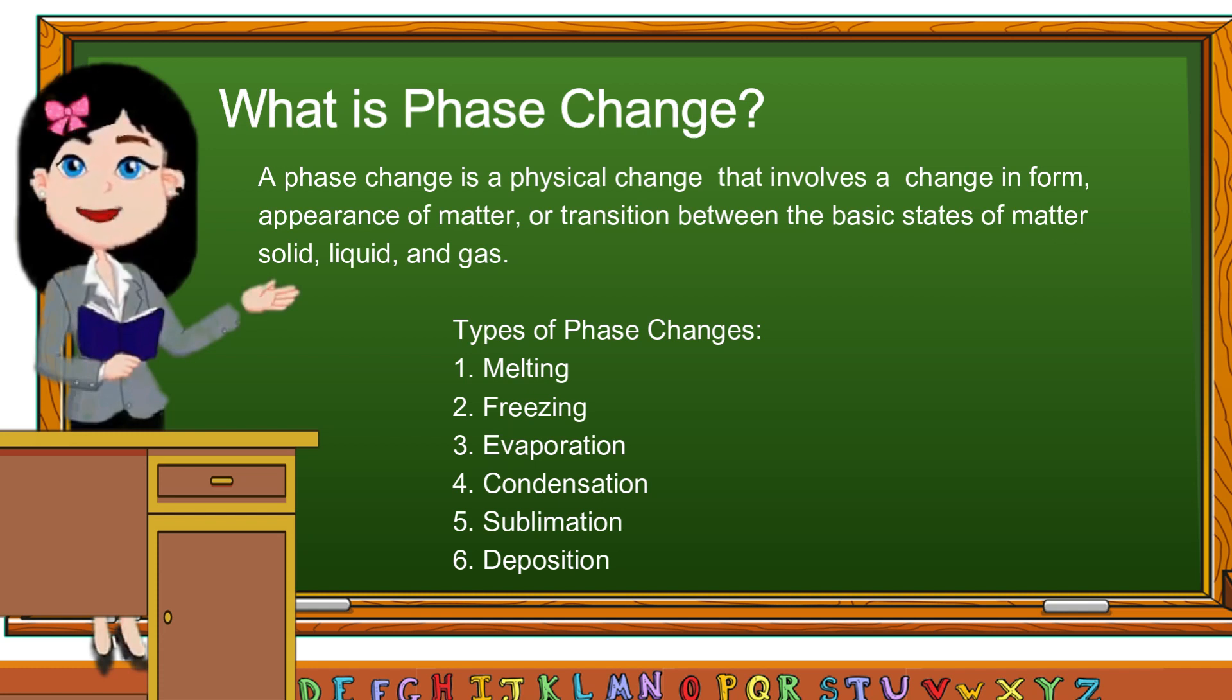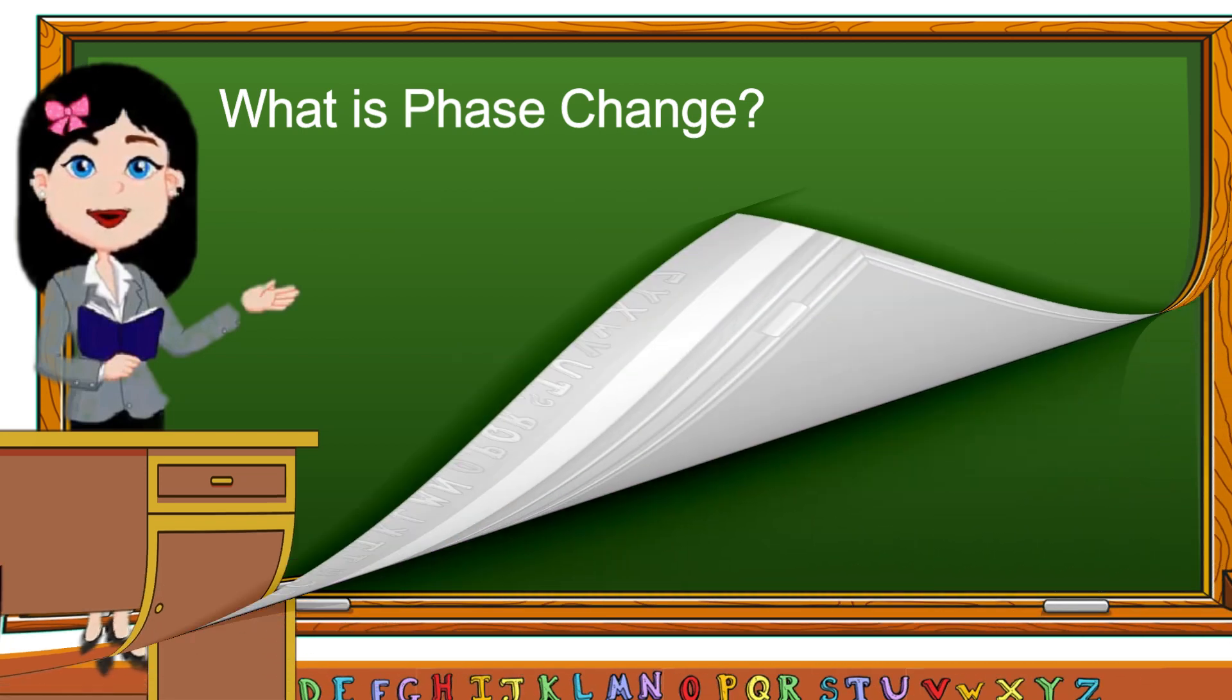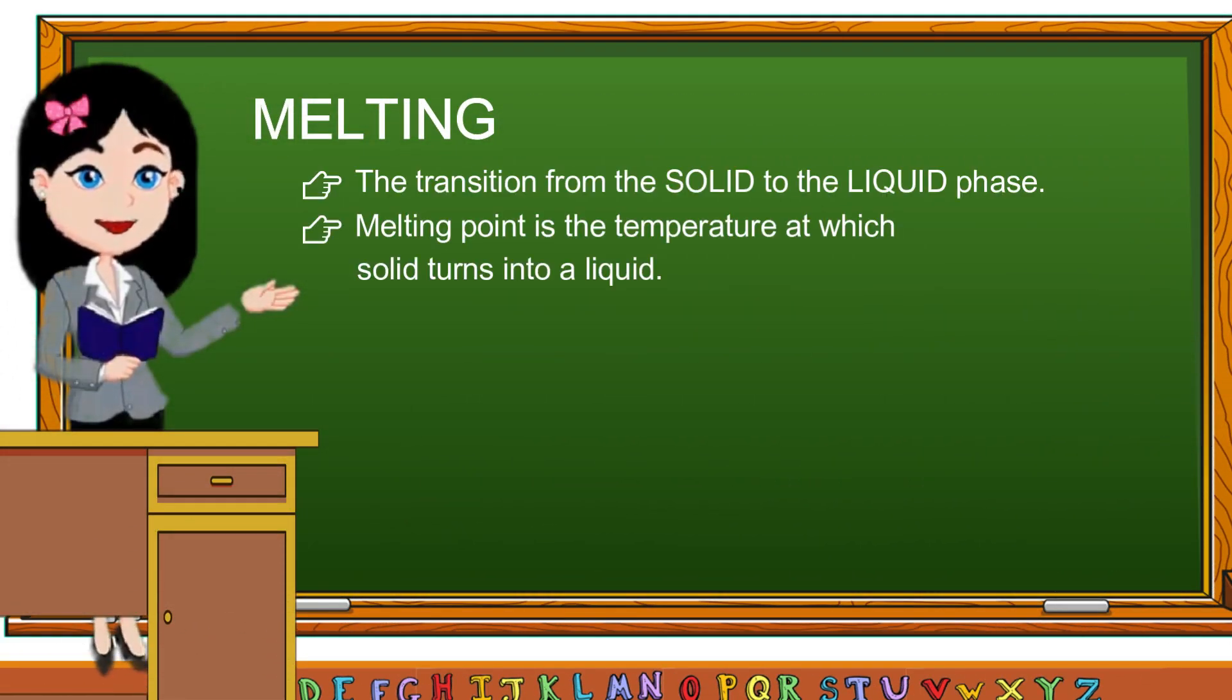When solid turns to liquid, this process of phase change is called melting. Melting happens when heat is applied to any solid material. It absorbs energy, making the particles move faster.